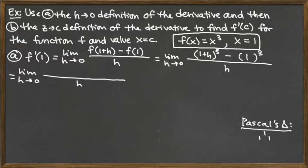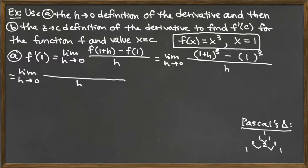Pascal's Triangle starts with just a triangle of ones. In each line, the first and last entry are ones that you throw in, and then the middle entries are gotten by adding the two entries above. So 1 plus 1 gives us a 2 — those are the coefficients if you were squaring something. The next line gives the coefficients if you cube something: throw the 1 at the beginning and end, and add each pair in the middle.